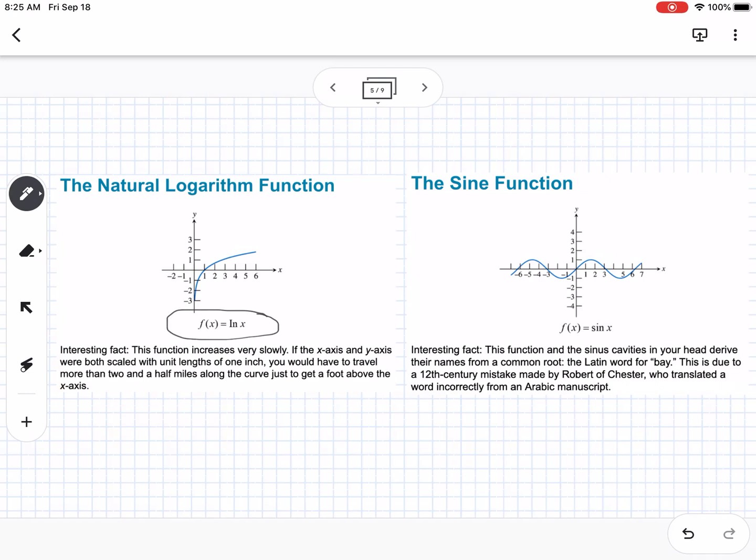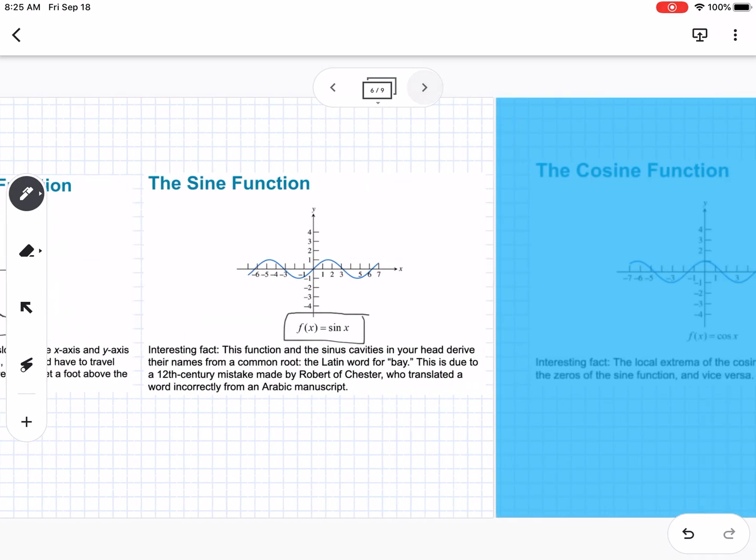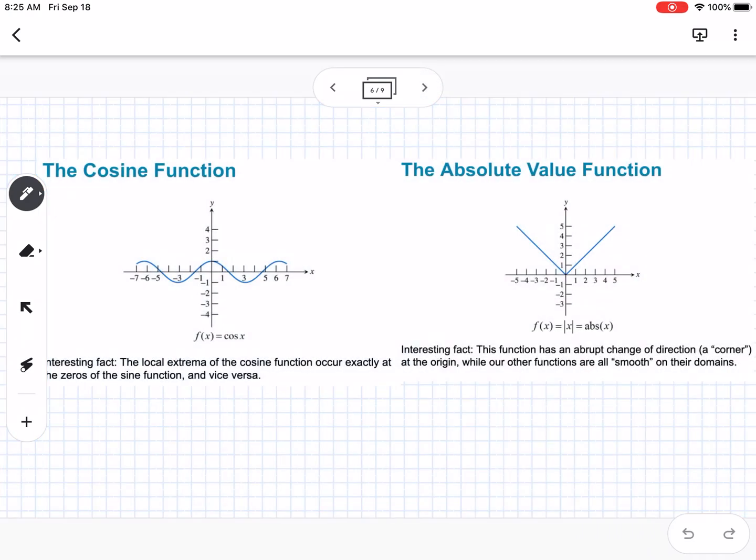Then we have sine, f(x) = sin(x). This function and the sinus cavities in your head derive their names from a common root, the Latin word for bay. This is due to a 12th century mistake made by Robert of Chester, who translated a word incorrectly from an Arabic manuscript.